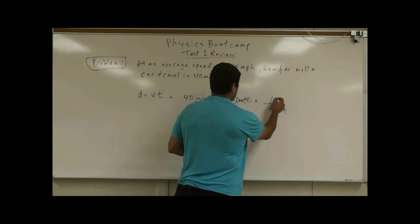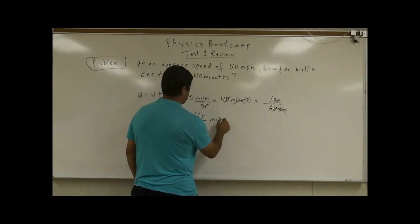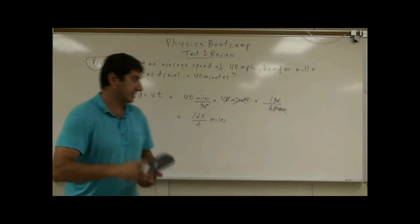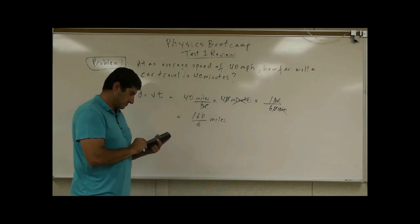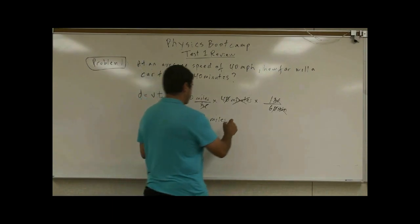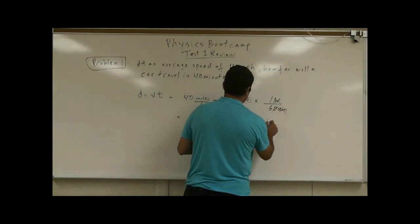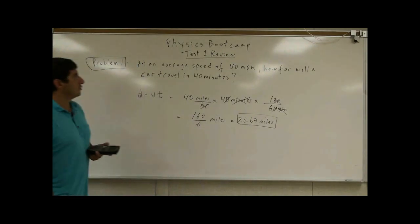The units is going to end up becoming—well, minutes is going to cancel minutes, hour is going to cancel hour, and the units is going to be miles. If you divide 160 by six, it's going to be 26.67 miles.